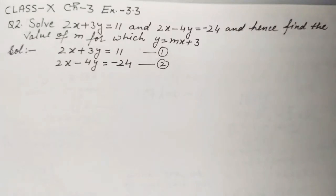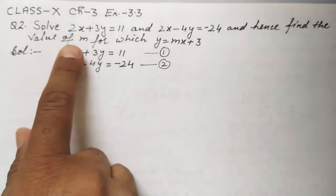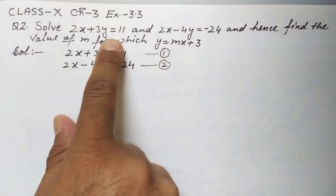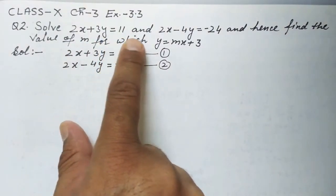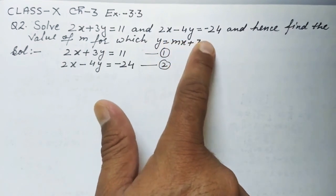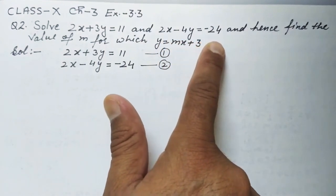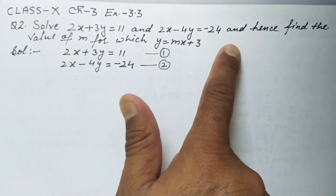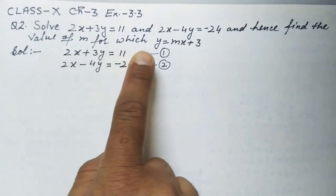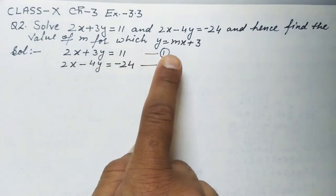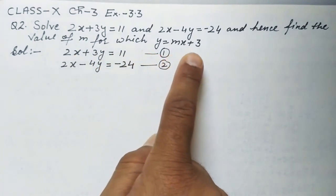Hello dear students, welcome to this maths class. Let's solve this question: solve 2x plus 3y is equal to 11 and 2x minus 4y is equal to minus 24, and hence find the value of m for which y is equal to mx plus 3.